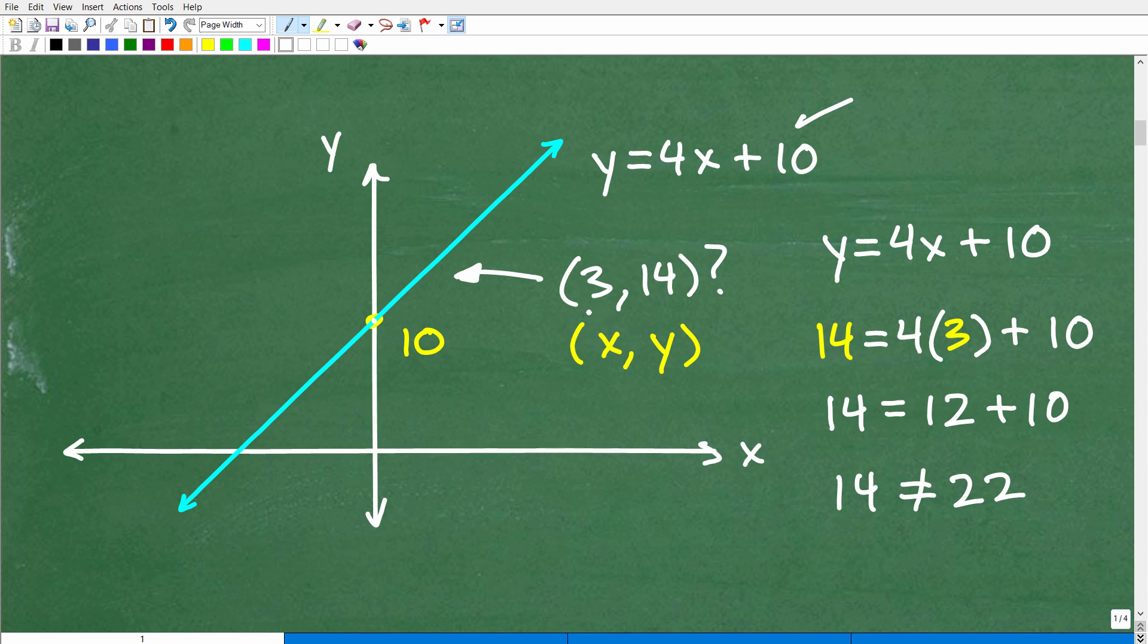So how can we determine if this point (3,14) is on this particular line? Well, what is X? Well, X is 3, and what is Y in this point? Y is 14. So what we can do is we can plug in for Y this 14. Okay? Right there. But at the same time, we have to plug in this 3 for X right here.